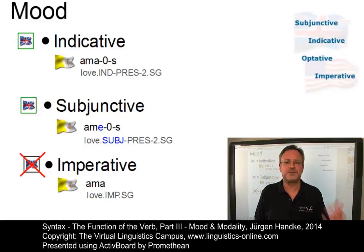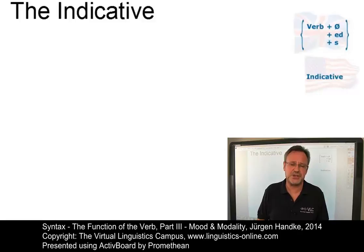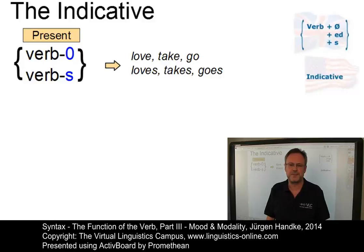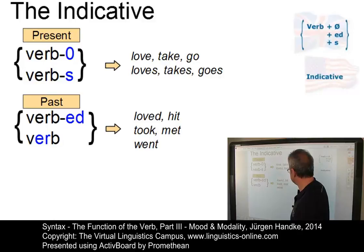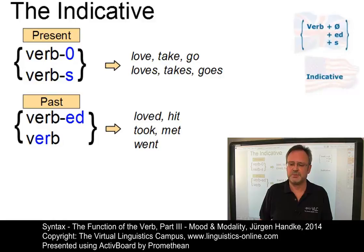Let's start with the discussion of the indicative mood in present-day English. The unmarked mood in English is the indicative mood. Its formal realization, leaving aside complex verb groups, is that of the standard inflectional paradigm for tense. In the present tense, formed by affixation — either zero affixation, or the third person singular -s (love/loves, take/takes, go/goes). In the past tense, formed by affixation (loved), zero affixation (hit), base change (took, met), or even suppletive forms (go/went). In present-day English, the indicative mood is used in the majority of constructions.